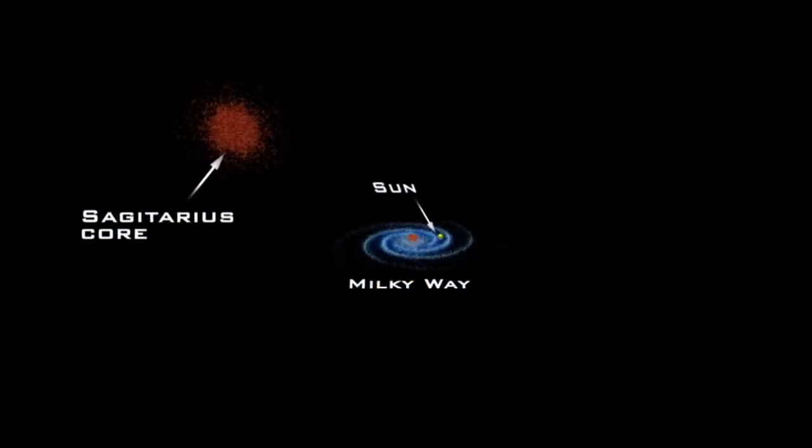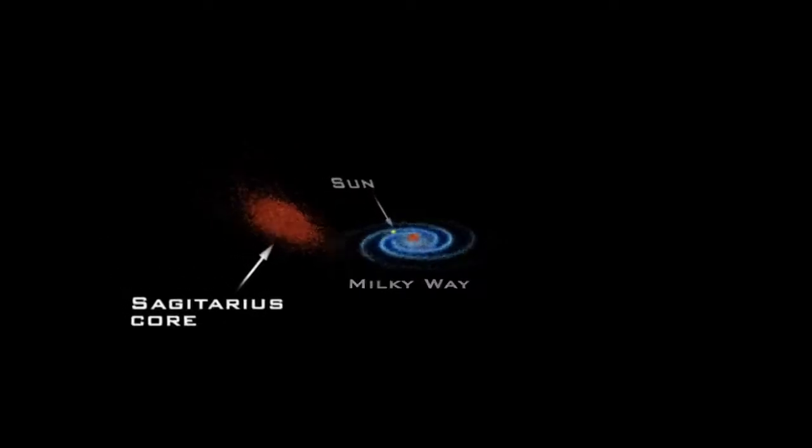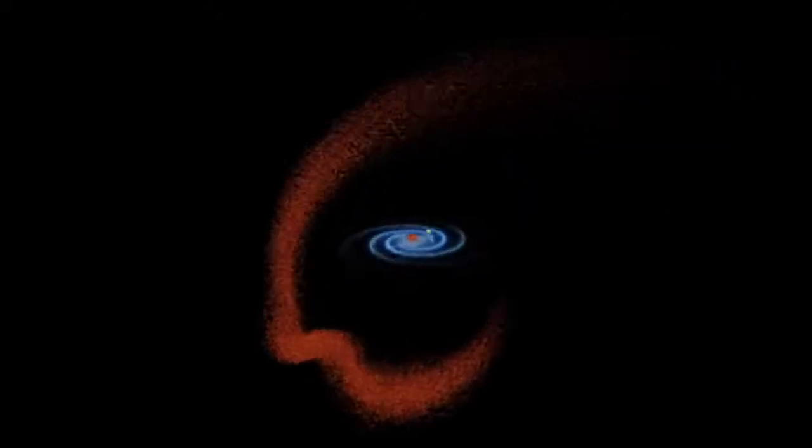As the dwarf galaxy passes through the Milky Way's disk, gravitational tides stretch the dwarf stars into long streams that wrap around the galaxy's orbit. For the dwarf, it's a fatal attraction.